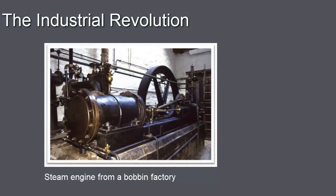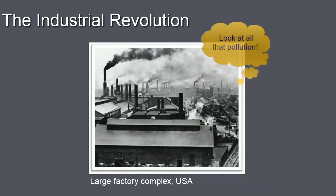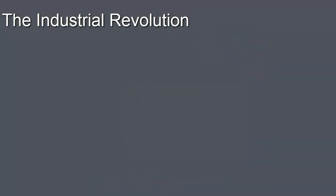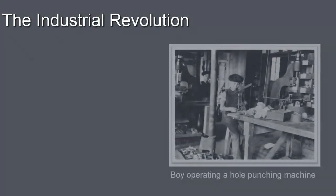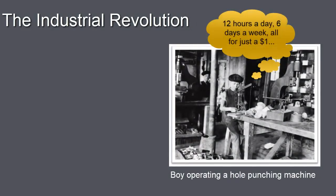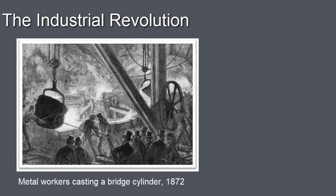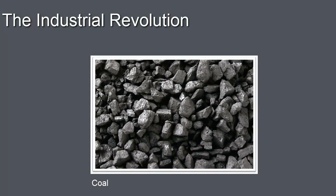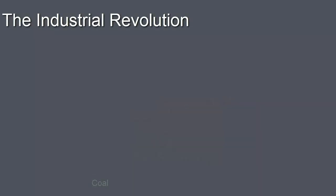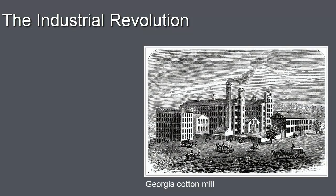Advances in steam engine technology also took place and allowed steam to become a prime mover for many industrial processes. The factory system also came into being during the Industrial Revolution, bringing large numbers of workers, including women and children, together in the same building. Manufacturers started using new basic materials, including iron, steel, and cotton, and new energy sources like coal, electricity, and petroleum. All of these advances significantly sped up the production of manufactured items and the capacity to produce.